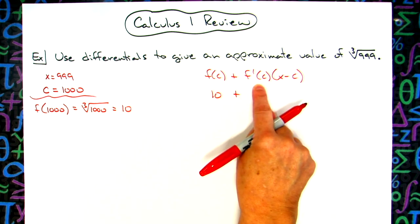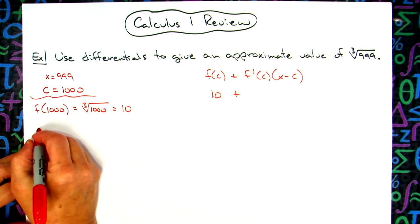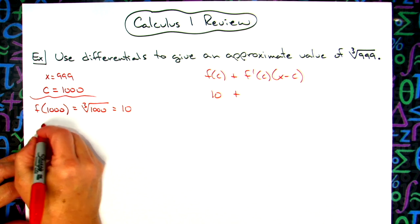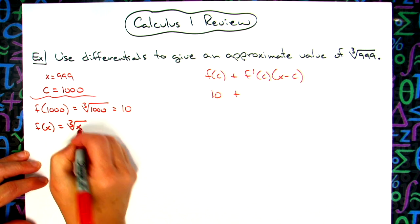Now I need to find the derivative of the function and then plug c into it. So my function is the cube root of x. So f of x is going to be the cube root of x. My function is that cube root.